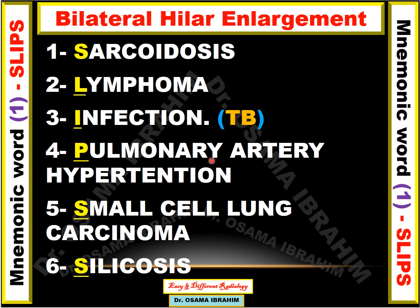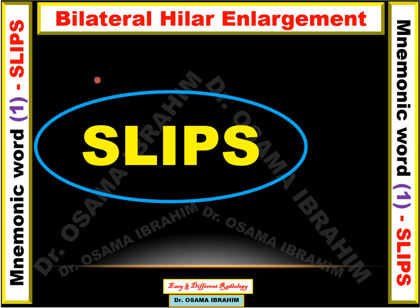Pulmonary artery hypertension causes bilateral hilar enlargement; however, it can be discriminated from enlarged lymph nodes by the hilar convergence sign, as discussed in a previous presentation. Small cell lung cancer causing bronchial airway masses can cause hilar enlargement. Silicosis, also as an occupational history cause, can cause hilar enlargement associated with dense opacities in the lungs, more in the upper and middle lung zones.